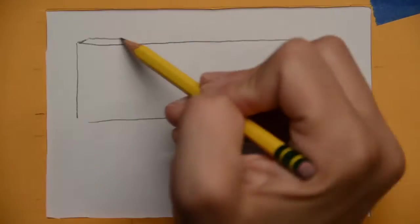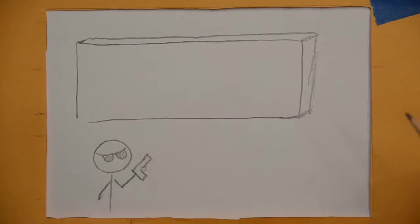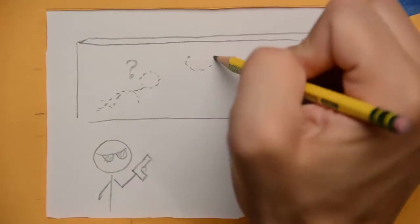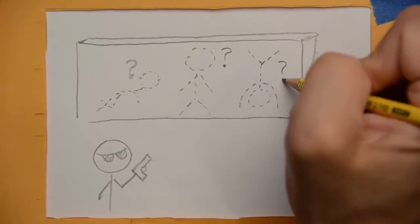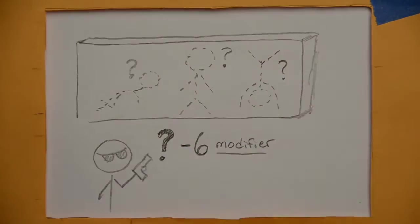If the barrier completely blocks the target and the attacker cannot see the target, then the attacker will get a minus six dice pool modifier for performing a blind fire attack. However, the defender is also effectively considered unaware of the attack and does not get to defend.